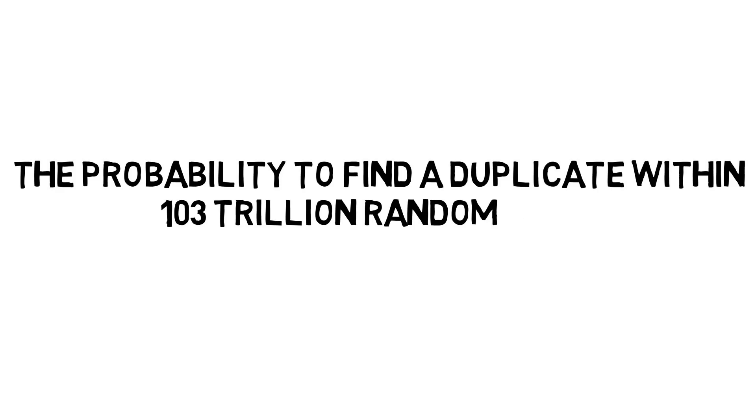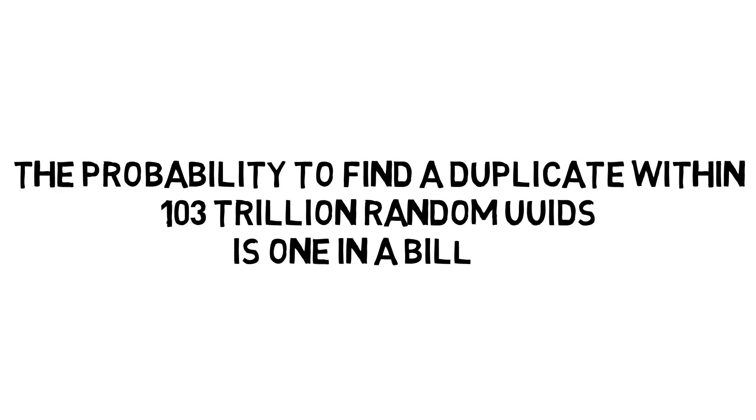Another way to describe that: the probability of finding a duplicate within 103 trillion numbers is one in a billion. So what this basically means is if I'm writing software that needs a unique identifier for something in a database, I can generate one of these numbers using random ones and zeros, and the chances that it's going to clash with another number in my database — or in fact with any database in the world — is incredibly small.